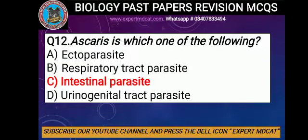Question number 12: Which one of the following is correct? Options: A) toparasite, B) disparate track parasite, C) intestinal parasite, D) urogenital tract parasite. The correct option is C, intestinal parasite.